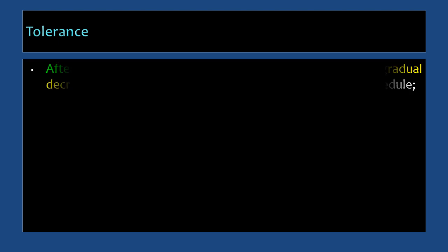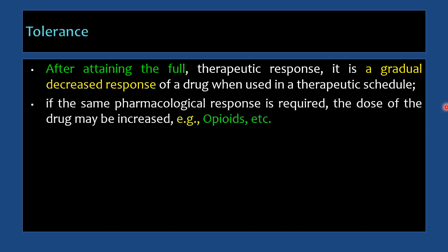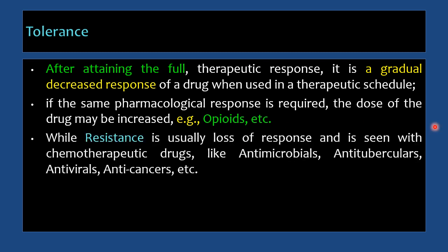Tolerance: after attaining the full response, there is a gradual decrease in the response of the drug when given on its therapeutic schedule. To maintain the same pharmacological response, the dose is usually increased — as in cases of opiates, barbiturates, benzodiazepines, or even alcohol. In some conditions, increasing the dosage does not solve the problem; instead a proper dose interval is required, as with nitroglycerin.